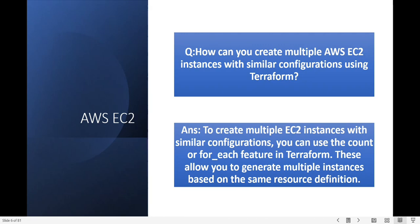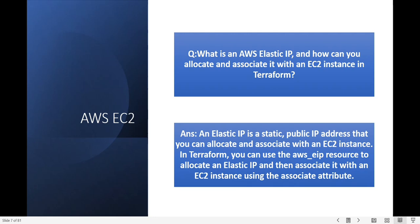Next question: what is the AWS Elastic IP and how can you allocate and associate it with an EC2 instance in Terraform? An Elastic IP is a static public IP address that you can allocate and associate with EC2 instances. In Terraform you can use the AWS EIP resource to allocate the Elastic IP and then associate it with the AWS instance.